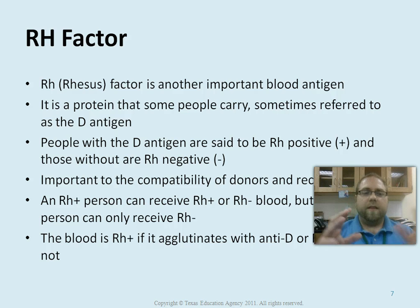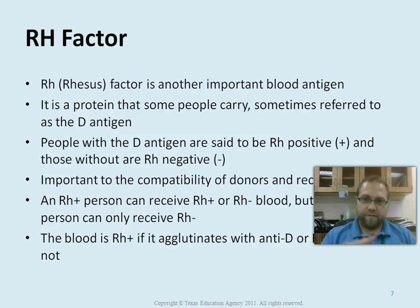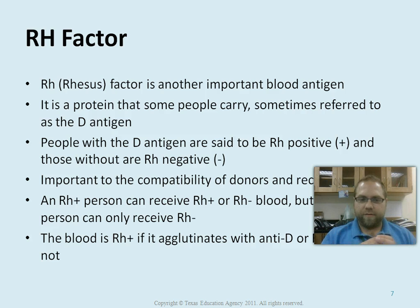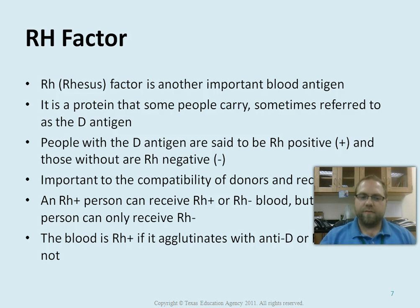The RH factor, or rhesus factor, is another important antigen — another protein on the blood cells. Some people carry it and some do not; it's sometimes called the D antigen. If you have the D antigen, you are RH positive. So if someone says you have O positive blood, that means your type is O and you are RH positive. This is important for donor compatibility: if you are RH positive, you can receive either positive or negative blood. But an RH negative person can only receive from another RH negative, because it will agglutinate.